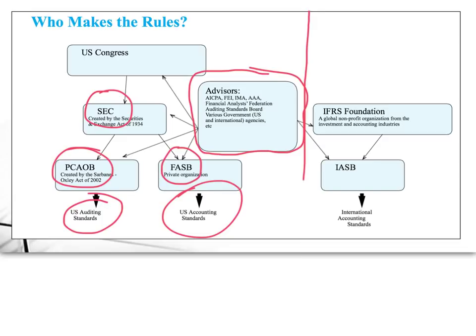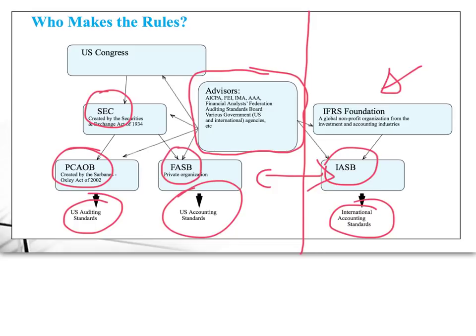There is also a parallel international group that created the international accounting standards now prevalent in the vast majority of the world. The IFRS Foundation created it, and the governing board — the international equivalent of FASB — is the IASB. These two have been meeting jointly for a number of years working on convergence. In some cases, IASB has moved things a little closer to U.S. GAAP, but in many more cases, FASB has moved us toward the international standards.